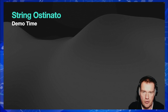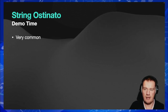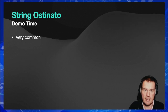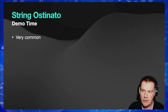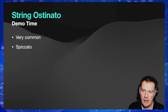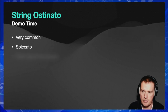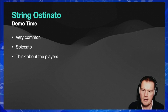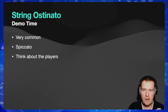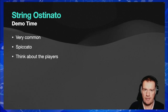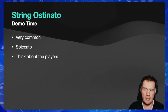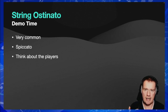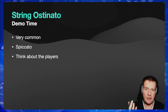We're going to look at string ostinatos in the demo because it's a very common writing technique — no matter what style of music you're doing, string ostinatos come up very frequently. Spiccato is the bowing technique we'll use because it's nice and short without being plucked like pizzicato. When writing string ostinatos, remember to think about the players: avoid massive leaps in the notes, as they can be technically difficult. Also consider the range — a violin has a lowest and highest note, and playing ostinatos at the very extremes leaves you fewer choices.